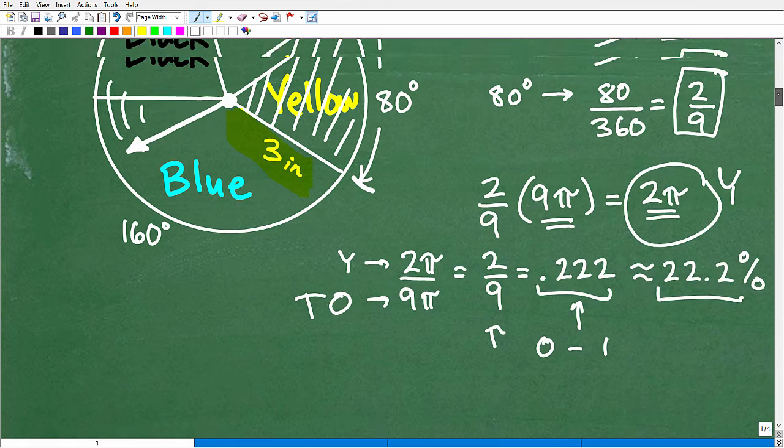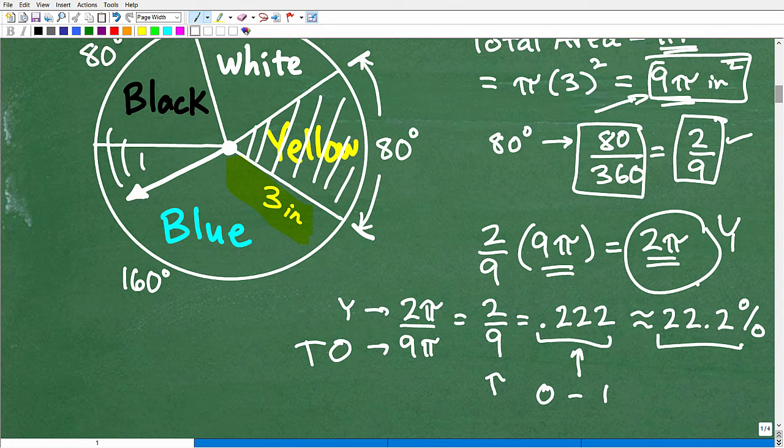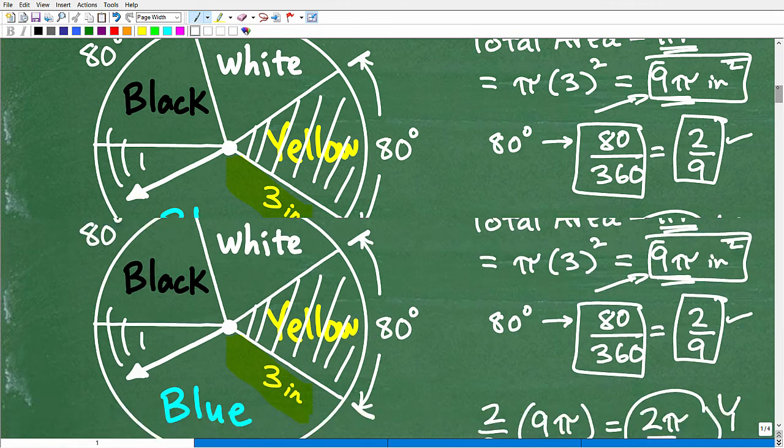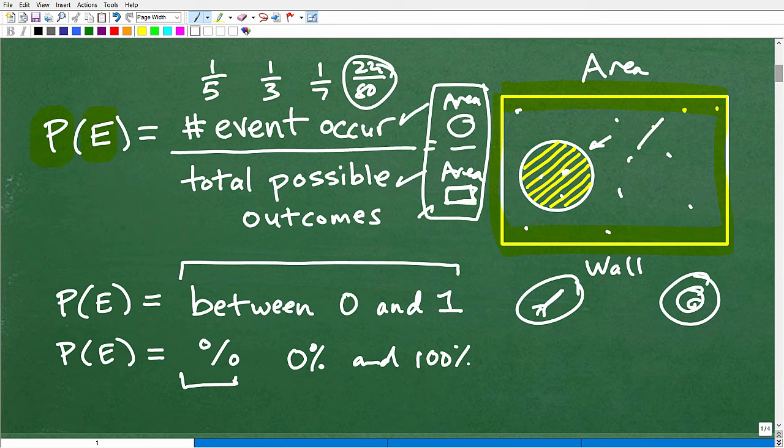Now, somebody out there could say, well, I don't need to find the area of the circle. I could just know that right here, this represents 80 out of 360, and that would be two ninths. And then I could convert that to a decimal, and that would be fine, too. For this particular problem, that would be okay, too.